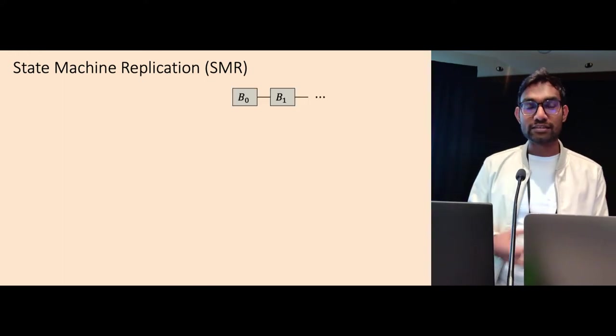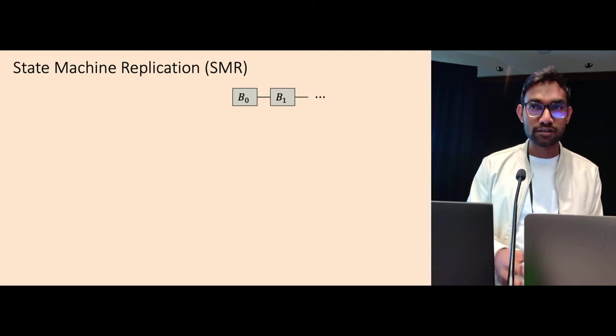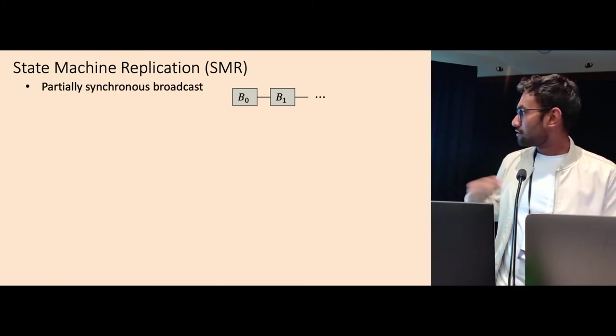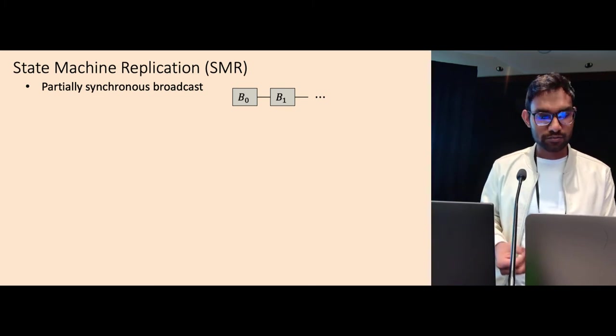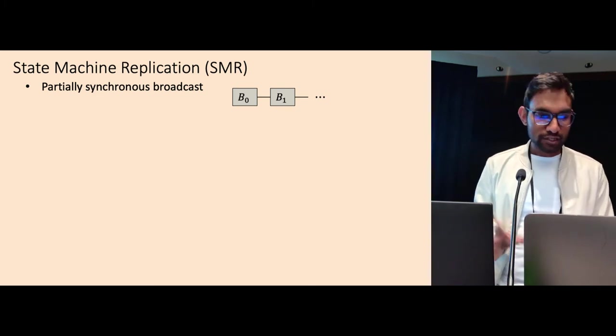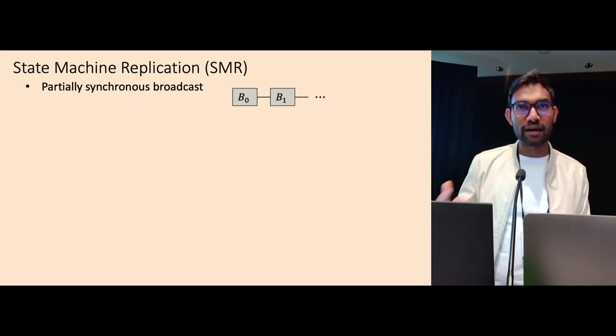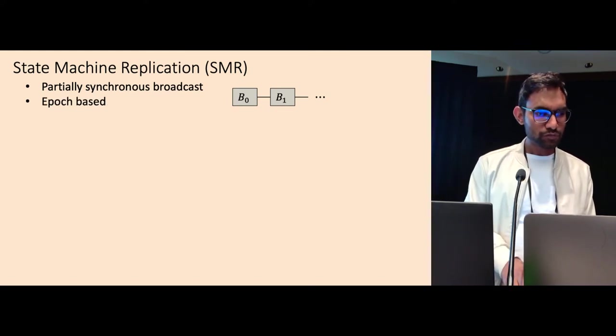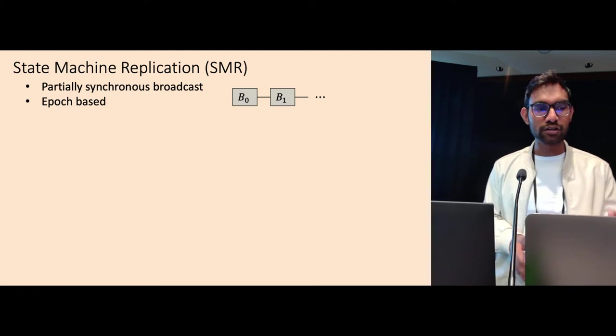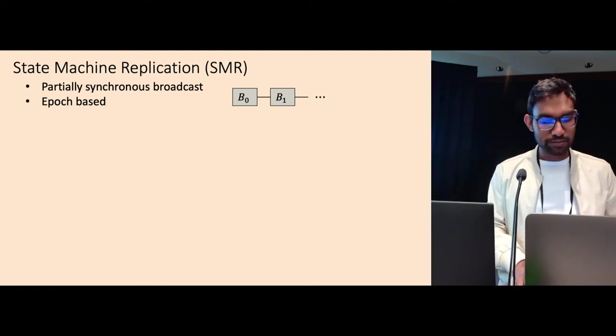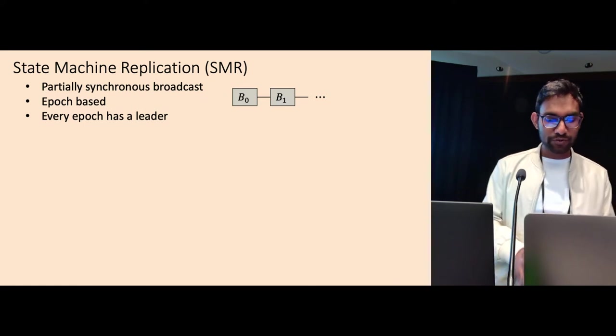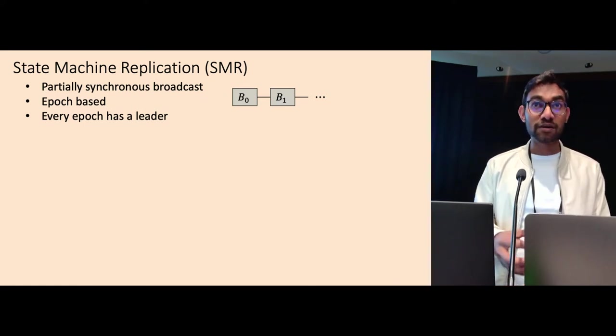Another tool we need is state machine replication. So you can think of this as blockchains. That's the modern name of state machine replication. So it is analogous to partially synchronous broadcast protocol. There are some subtle differences, but you can think of that as a broadcast protocol in partial synchronous setting. So we will only review the epoch-based state machine replication protocol, where every epoch has a leader. I'll briefly review how SMRs typically work.